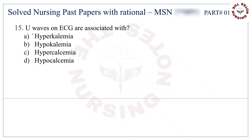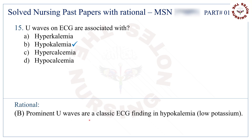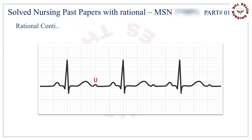Question number 15: U waves on ECG are associated with. The correct answer is B — hypokalemia. This is the U wave, and prominent U waves are a classic ECG finding in hypokalemia, or low potassium.